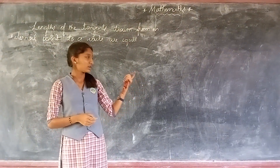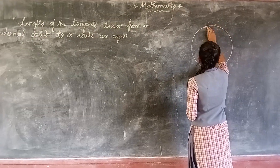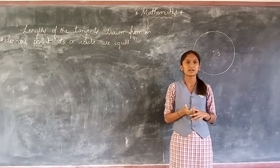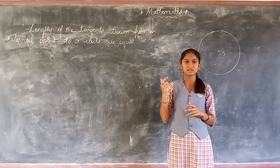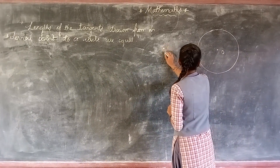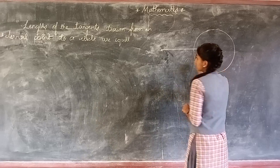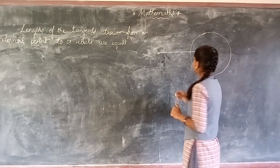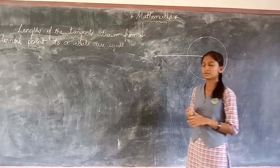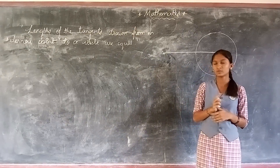So according to the statement, let's refer to the figure. In the construction, before drawing two tangents from an external point to the center of the circle, we will draw one line. The statement is: the length of the tangents drawn from an external point to a circle are equal. From an external point to a circle, how many tangents will be there? You can draw two tangents.